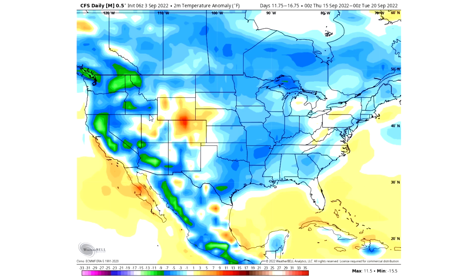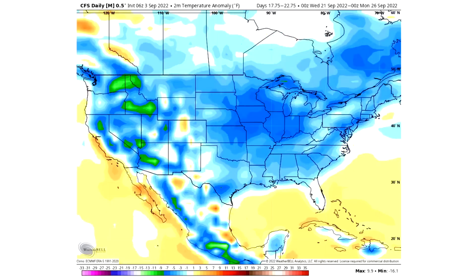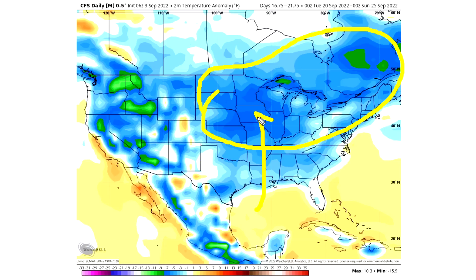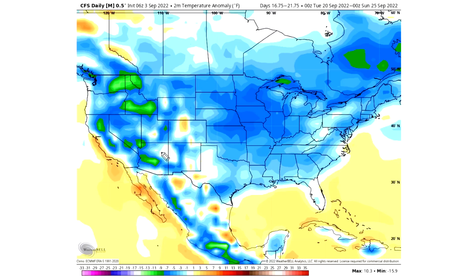As we reach the 20th through the 25th, we do see a cooler air mass move into the eastern half of the nation, even the north-central United States. We still have the colder temperatures out west as well, which is going to be interesting to note.